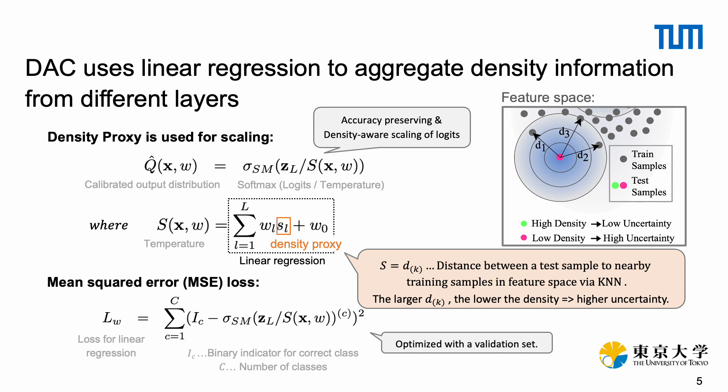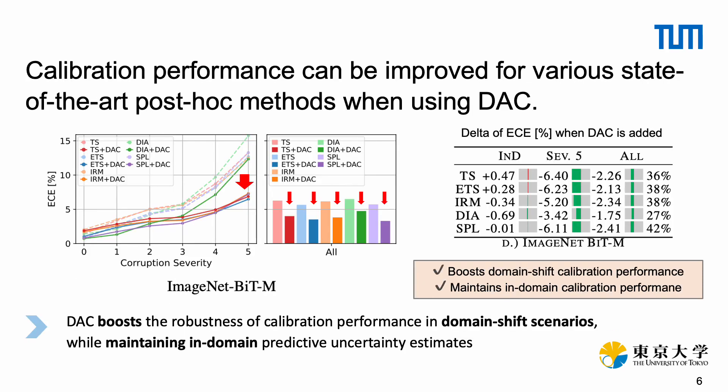The resulting proxy, which can also be called temperature, is used to scale the logits and thus the resulting probability distribution. Optimization is done with mean squared error loss. When DAC is combined with various state-of-the-art post-hoc models, calibration performance can be improved drastically.